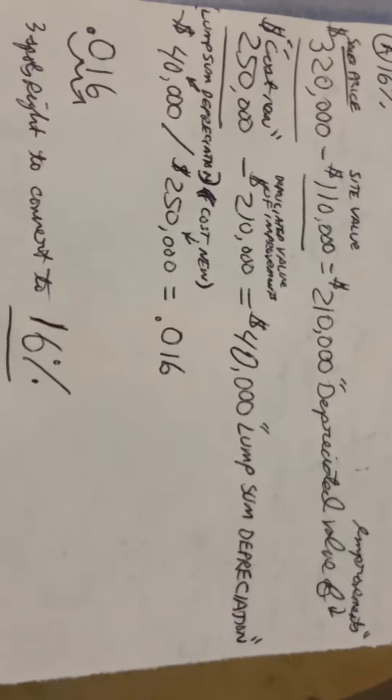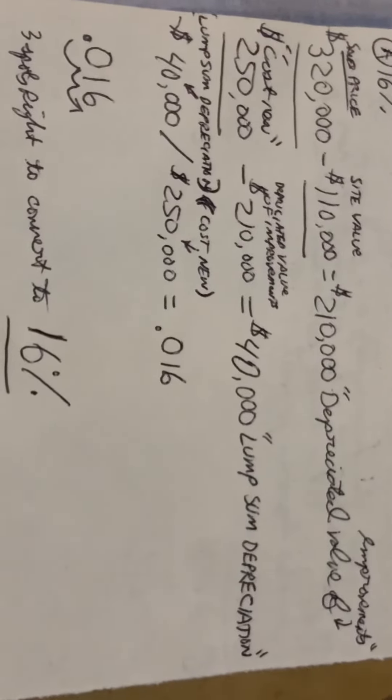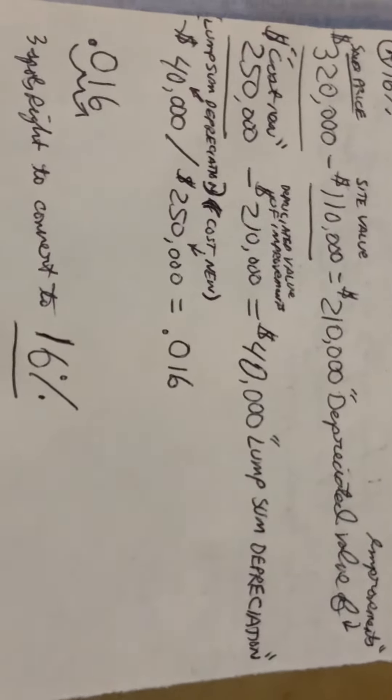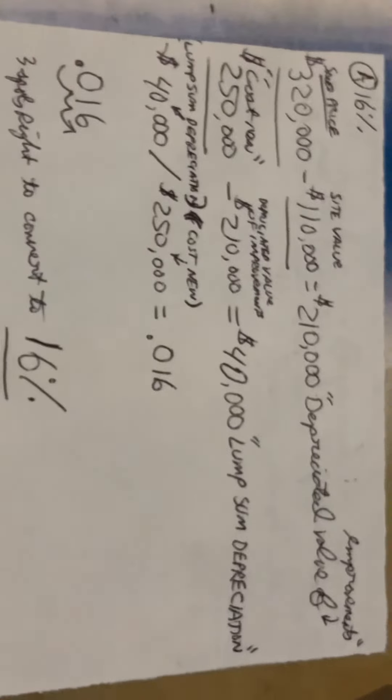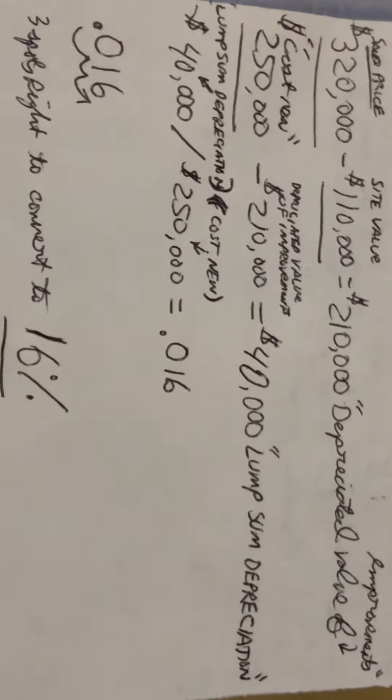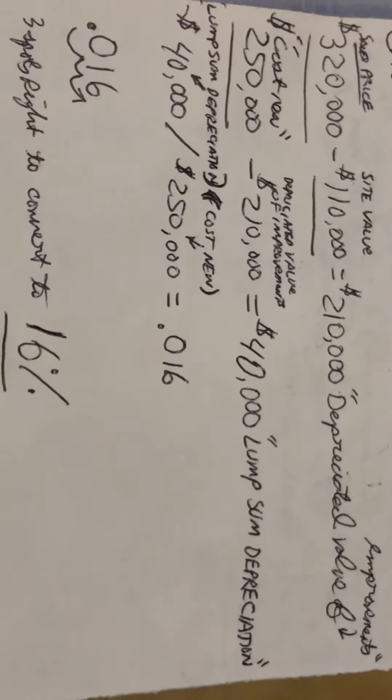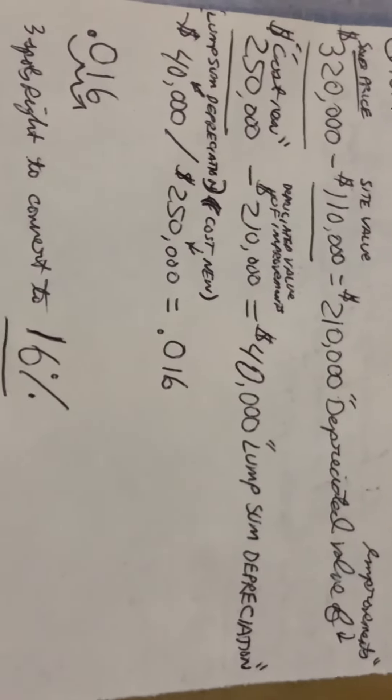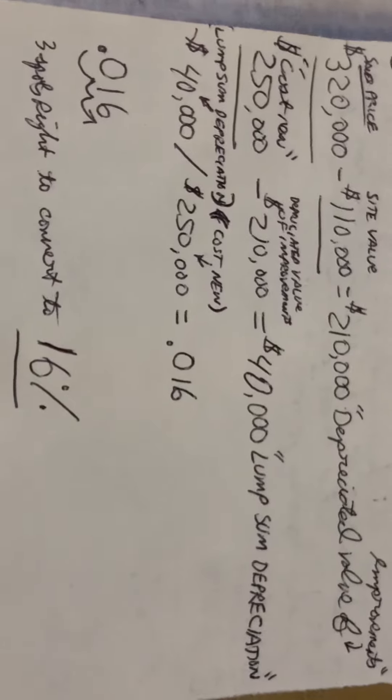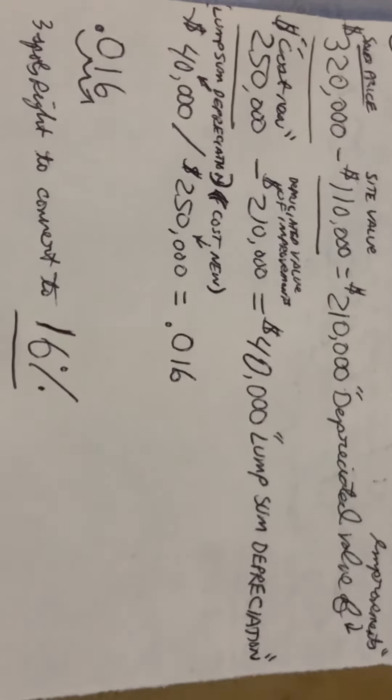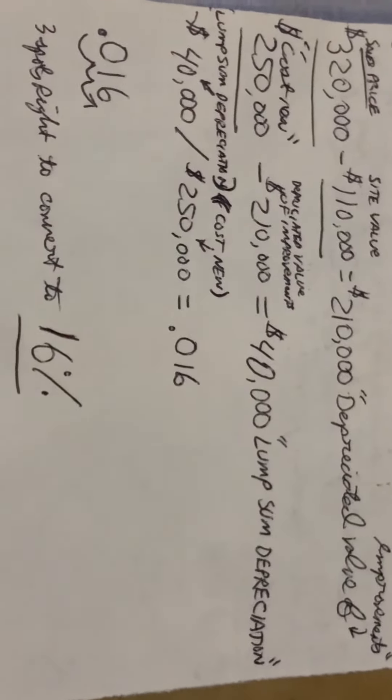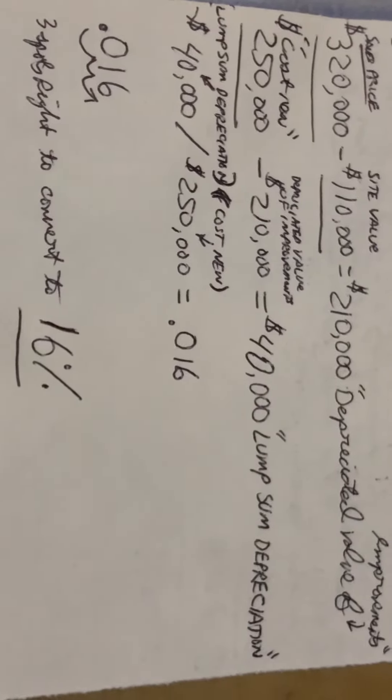Phase two, you're going to take what the cost new was of $250,000. You're going to minus $210,000, which was the depreciated value of improvements that we figured out from phase one. That equals $40,000 lump sum depreciation. That's the end of phase two.